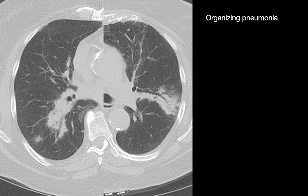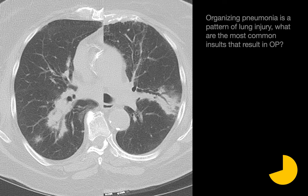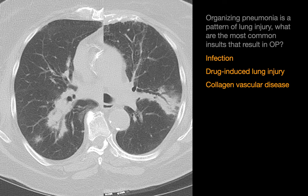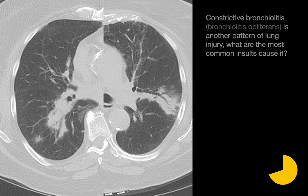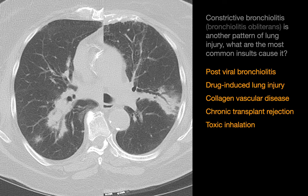This case is an example of organizing pneumonia. Organizing pneumonia is a lung injury response pattern. The three most common causes are lung infection, drug-induced lung injury, and collagen vascular disease. Constrictive bronchiolitis — what we used to call bronchiolitis obliterans — is another lung injury pattern. The most common insults causing constrictive bronchiolitis are viral bronchiolitis, drug-induced lung injury, collagen vascular disease, chronic lung transplant rejection, and toxic inhalation.